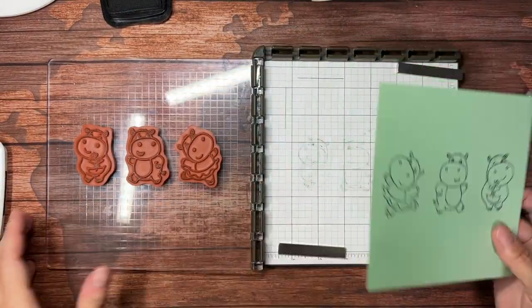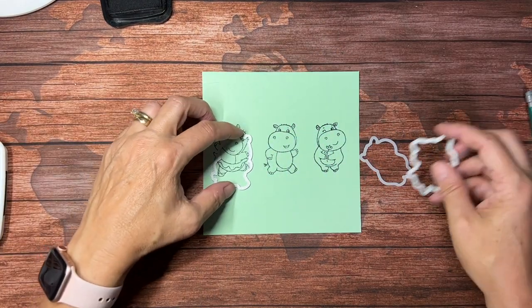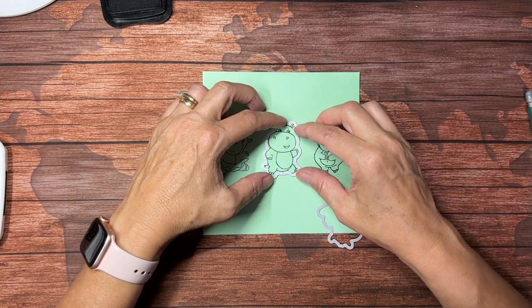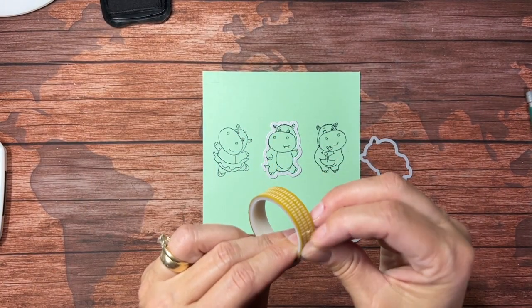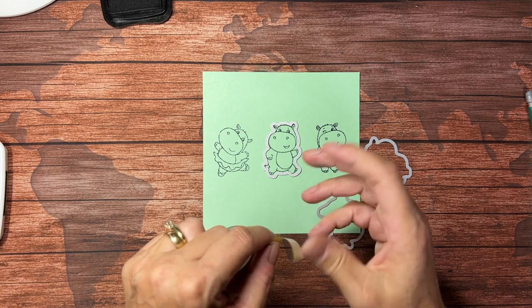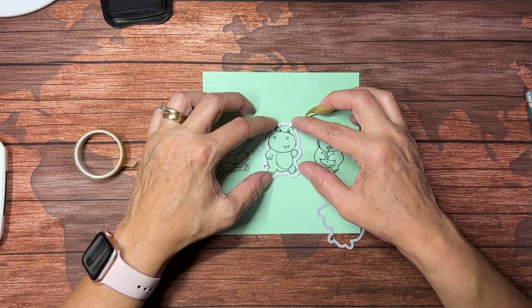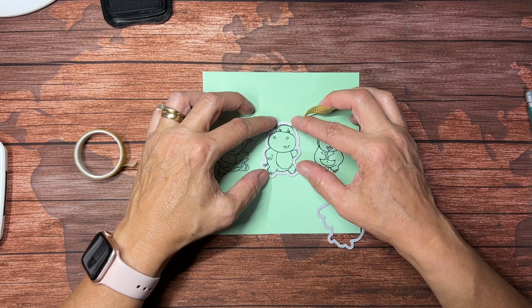Now with this, I'm going to set my stamps aside. I'm going to bring in my dies that go with these hippos. Now part of what makes die cutting images like this difficult is you need to take the time to really line them up nicely so that you get a really good image cut.